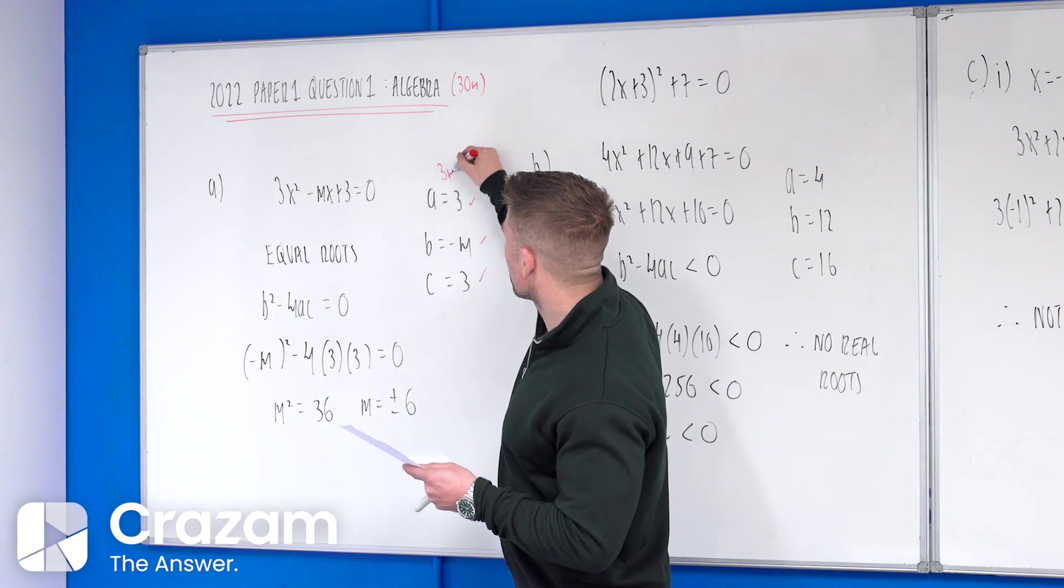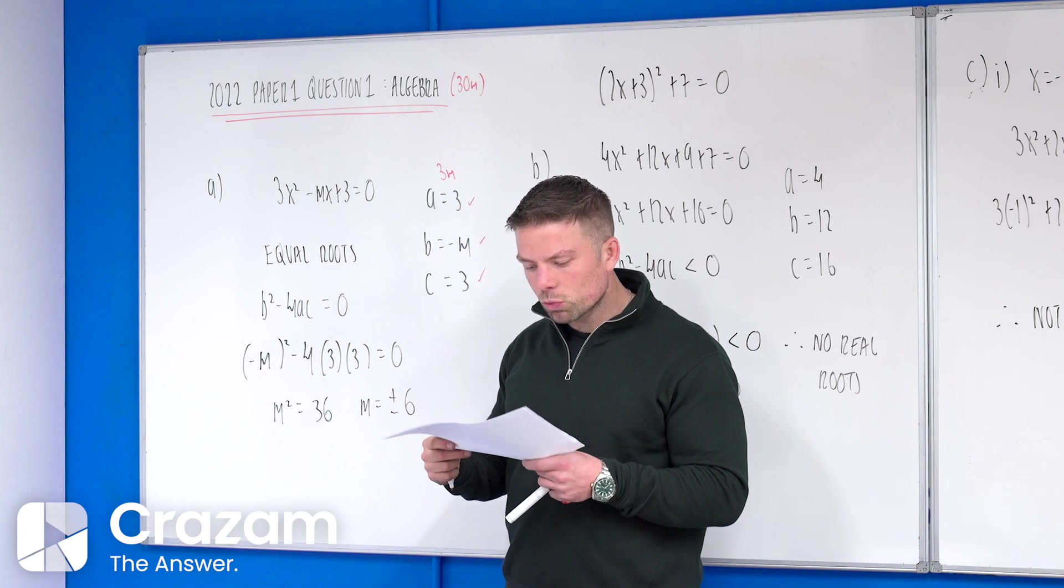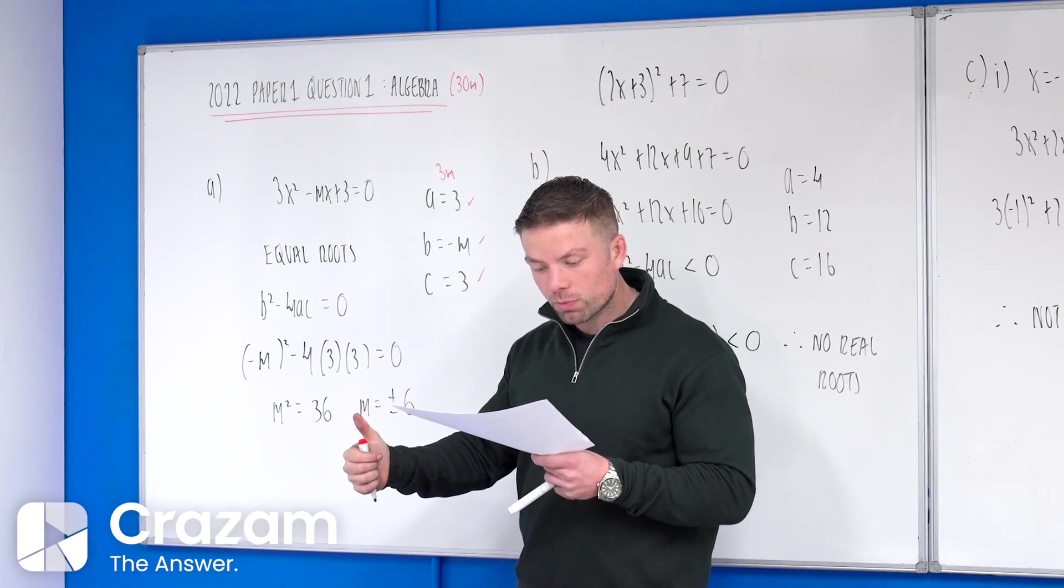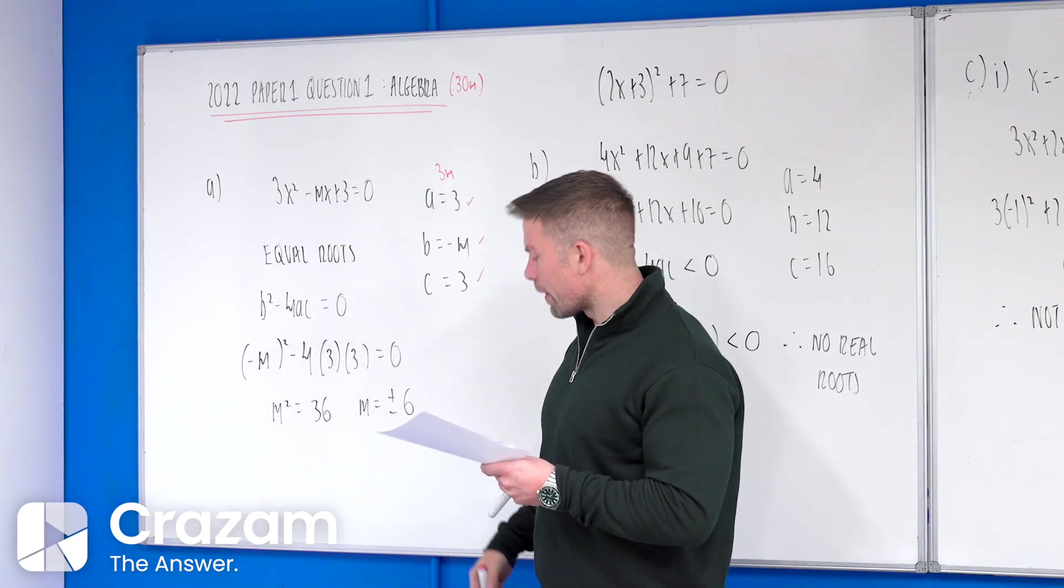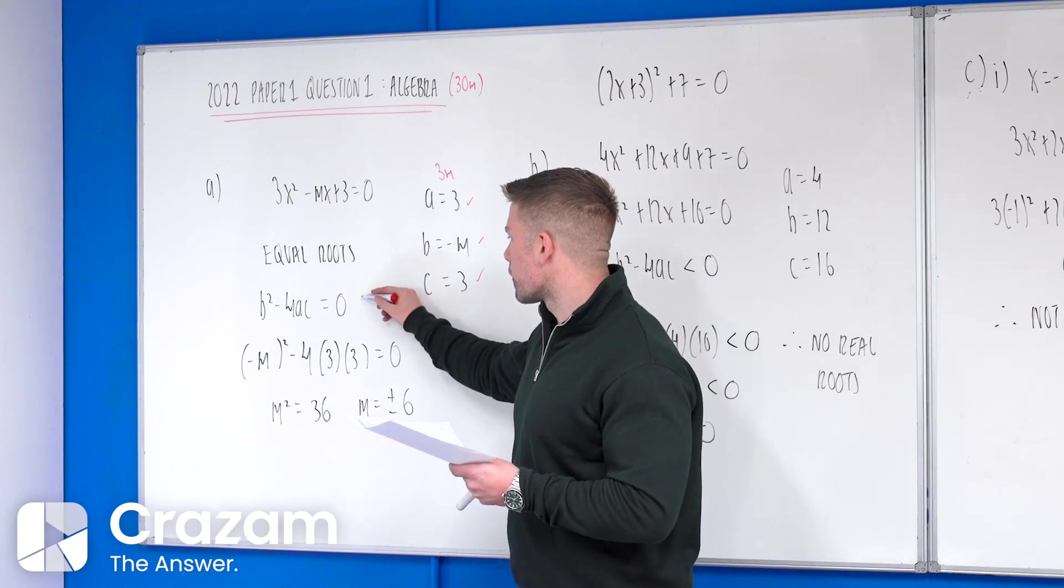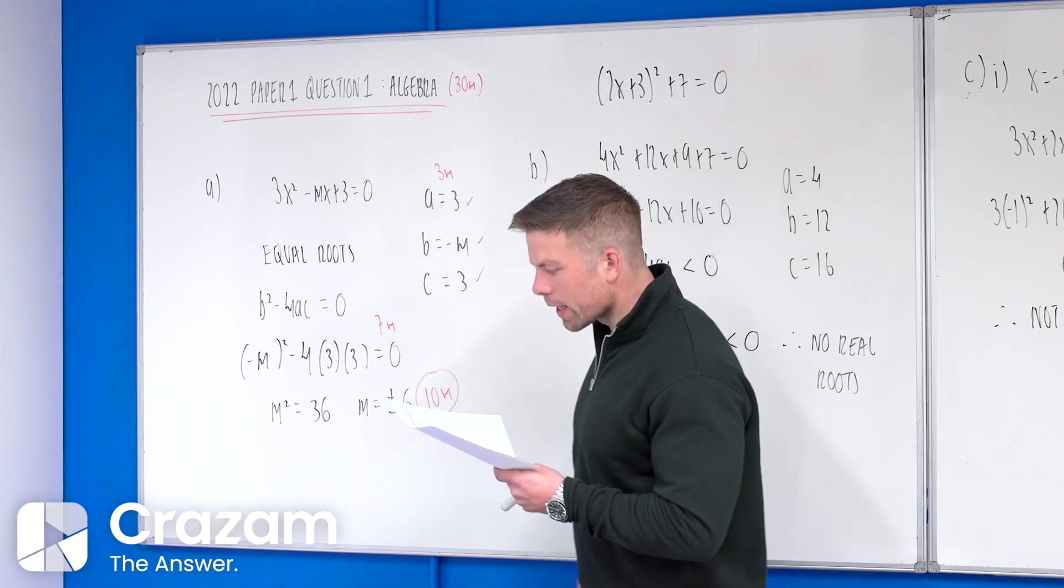that got you a low partial credit of 3 marks. For the high partial credit, 7 marks would be 2 of the three steps I said correct. So b squared minus 4ac equals to 0, and subbing in for a, b, and c, that got you 7. And then solving for m overall would have got you 10 marks. So by subbing in here, we got 7 and 10 marks there for part A.